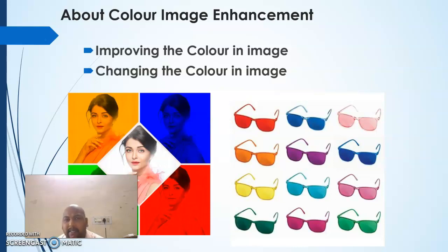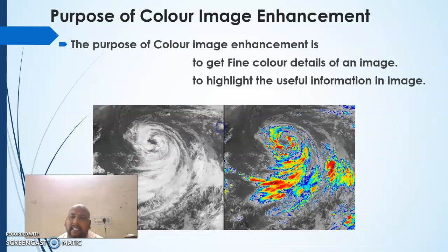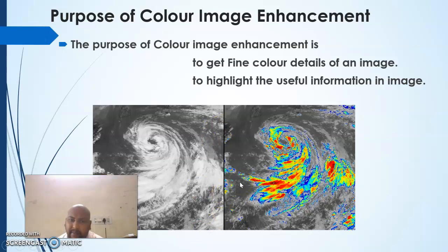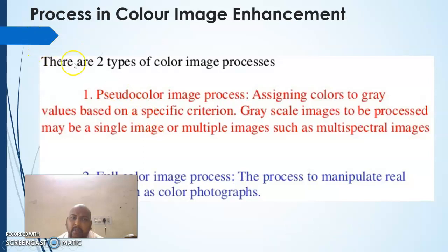For color image enhancement, we either improve or change the color in the image. The purpose of enhancement is to find color details of an image, improve the color information, or highlight useful information. The process falls into two kinds: pseudo color image processing and full color image processing.